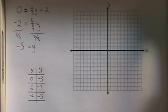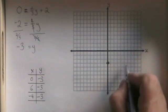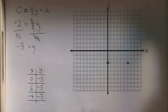Now it's time to graph it. 0, negative 3 is right here. 6, negative 3 is here. And negative 4, negative 3 is here.